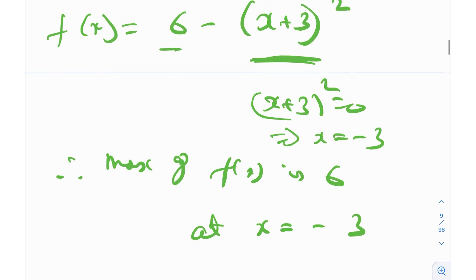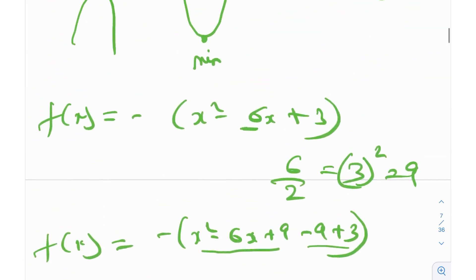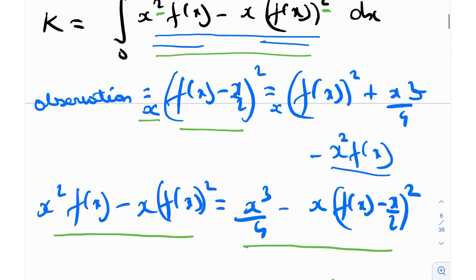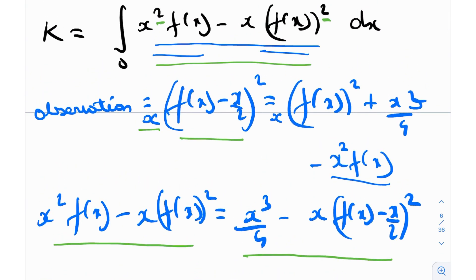This is a similar idea over here. This is what I was referring to earlier as quite elementary, this idea of completing the square and finding the maximum of a quadratic. And that, believe it or not, actually relates to the question. x²f(x) - x·f(x)² dx is equal to this quantity from the observation that we just made.